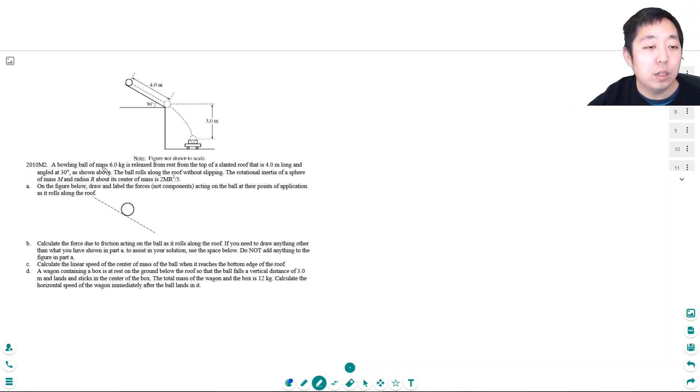A bowling ball of mass 6 kg is released from rest at the top of a slanted roof that is 4 meters long, and angled at 30 degrees as shown above. The ball rolls along the roof without slipping. The rotational inertia of a sphere of mass m and r about the center of mass is 2mr squared over 5, so they give you what I is.